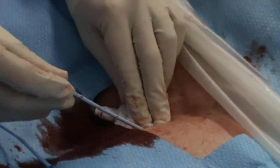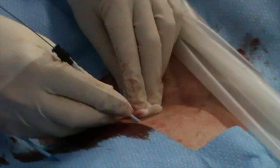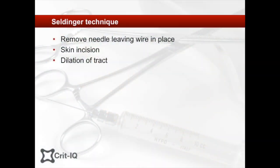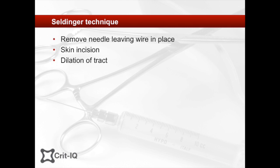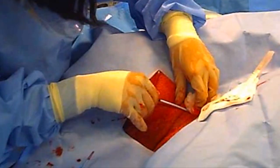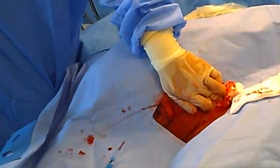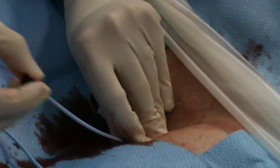Next, a dilator is advanced over the wire, forming a tract from the skin into the vein. This is a tricky stage, with care required not to kink the wire. To prevent this, ensure that you insert the dilator at the same angle as the initial needle insertion. Maintain constant pressure and control over the dilator by manipulating it close to the skin, as shown. Make sure that the wire moves freely within the dilator. The next step involves removal of the dilator, leaving the wire in place. It is at this point that the insertion site will bleed, so have gauze on hand to prevent excessive haematoma formation. The dilator may have a gentle curve on removal and this is fine, but it should not be frayed, kinked or damaged.